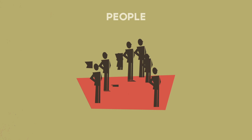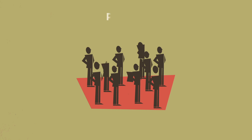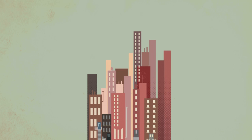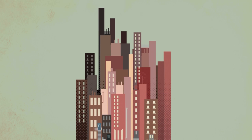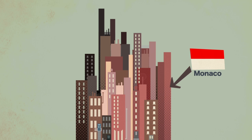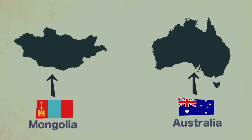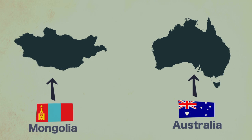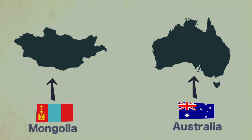Density refers to how many people there are in a given area. Usually cities have a higher population density than rural areas. The city-state of Monaco has the world's highest population density because it's so small, whereas large countries such as Mongolia and Australia are the least densely populated.